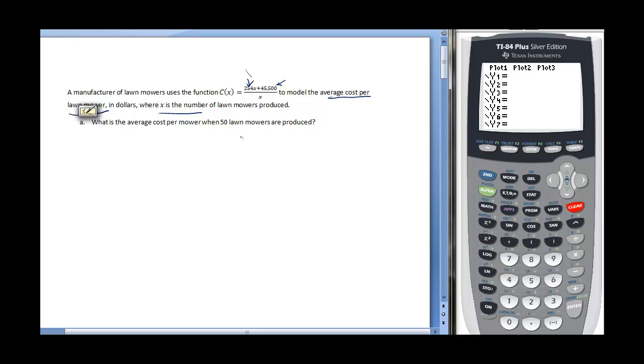X is the number of lawn mowers produced, so I would just put in 50 for X. So I would have 254 times X plus 45,500, except I'm putting 50 in for X, over X. I would get 58,200 for my numerator over 50, which would equal 1,164. If I produced 50 lawn mowers, the cost per each lawn mower to produce would be $1,164.